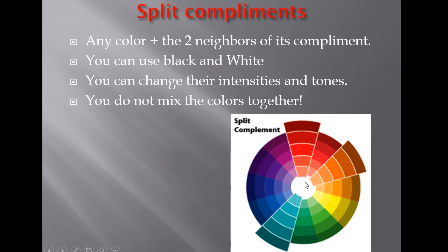A split complement takes a color and uses the neighbors of its true complement rather than the complement itself. So you could paint a picture with all the different values of red, all the different values of orange, and all the different values and intensities of blue-green, and they would look really strong together. Orange and red individually form the basis of red-orange, so any of those hues and changes will look good with blue-green.